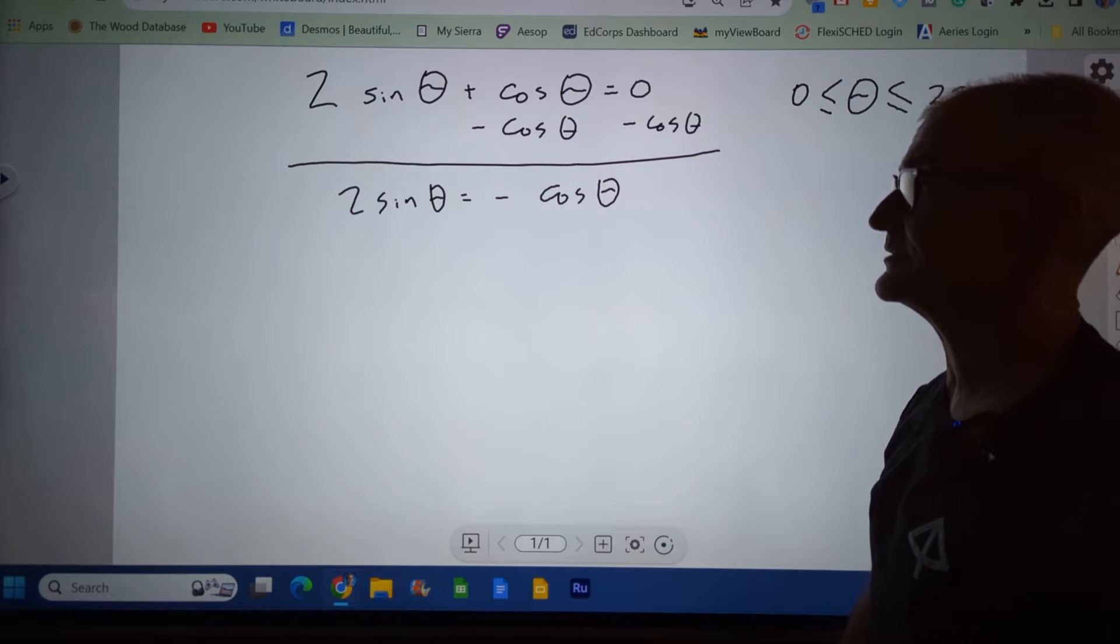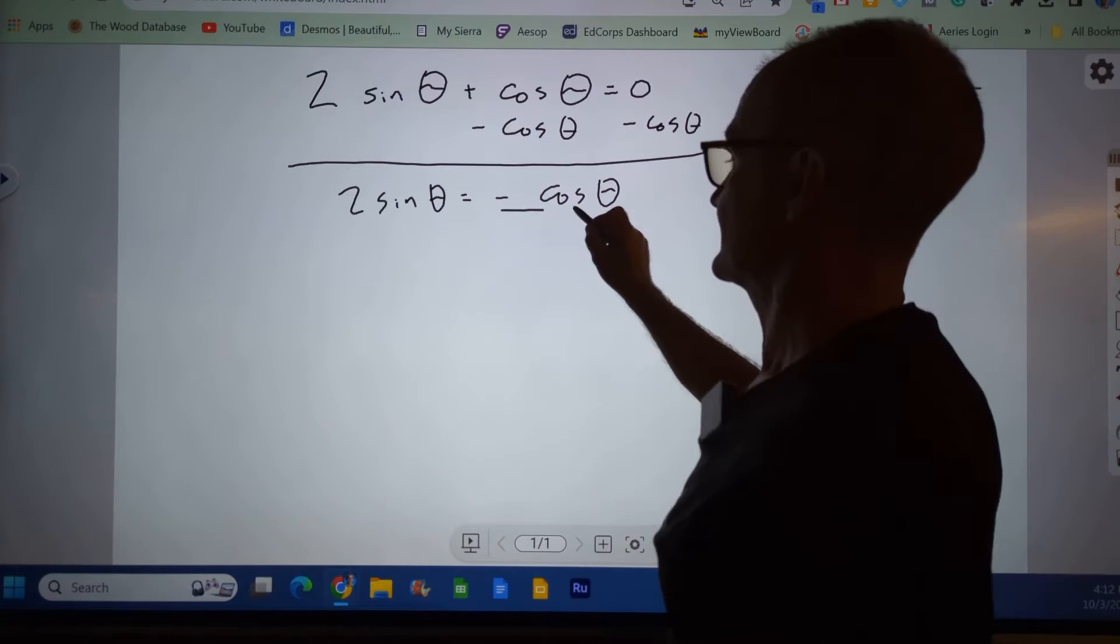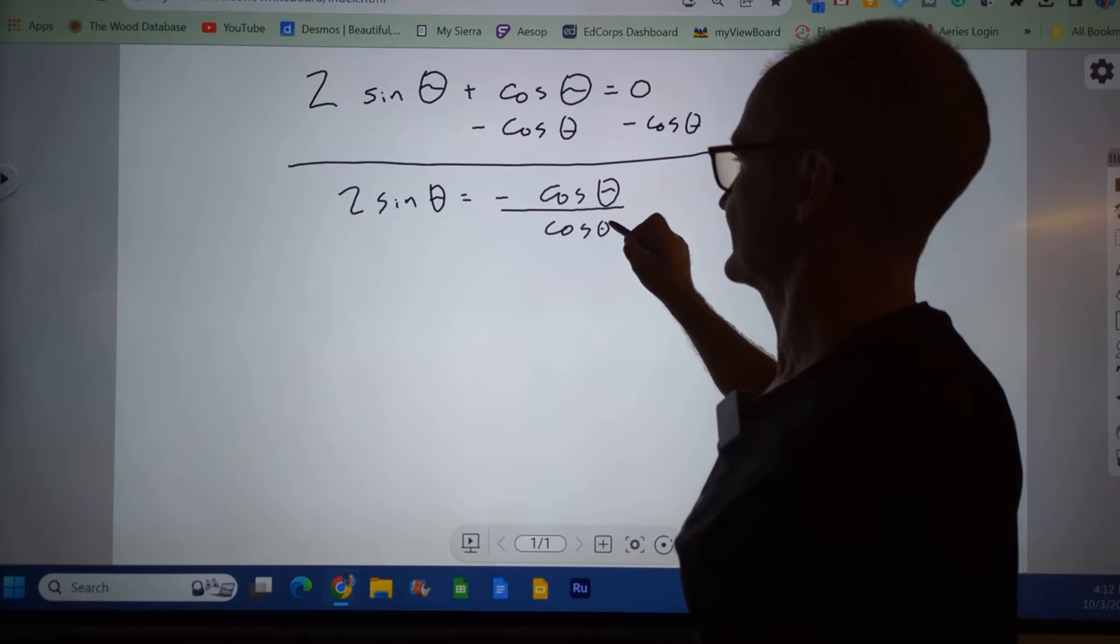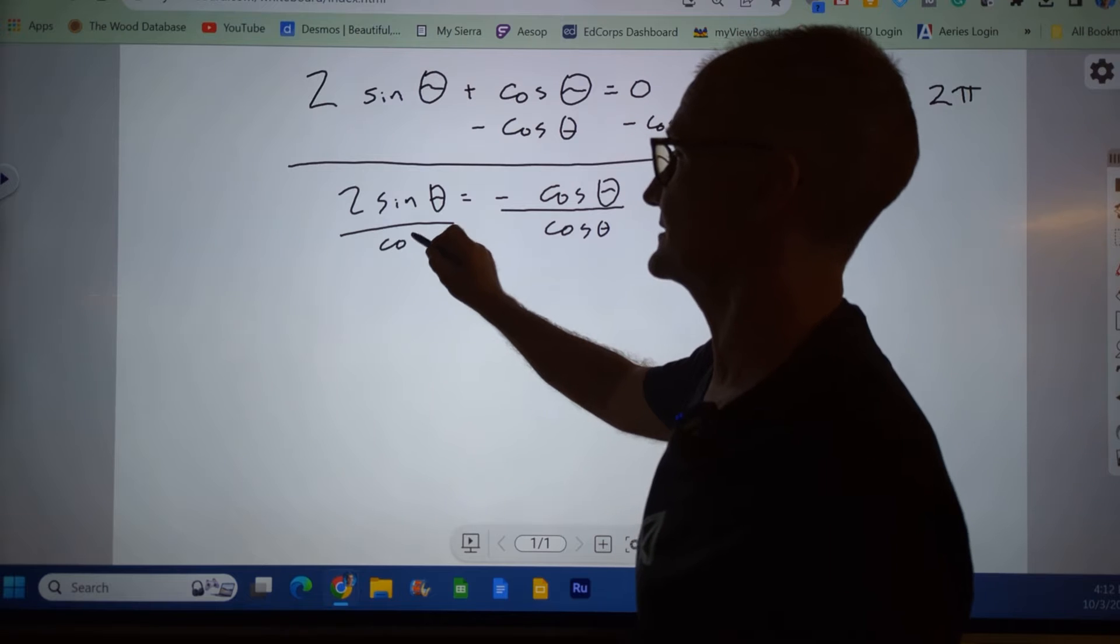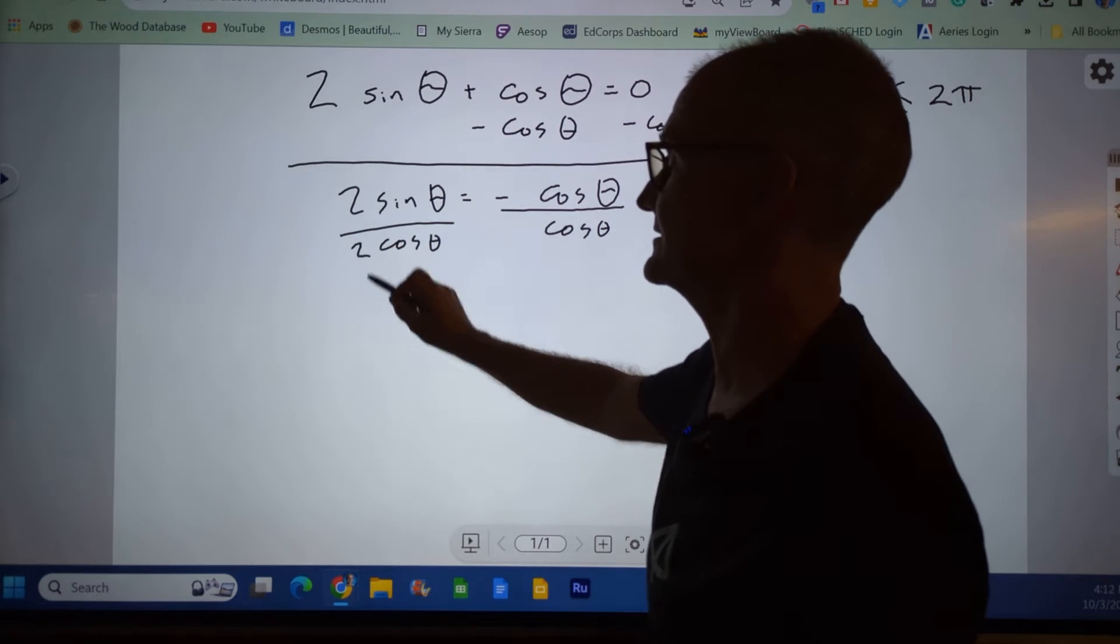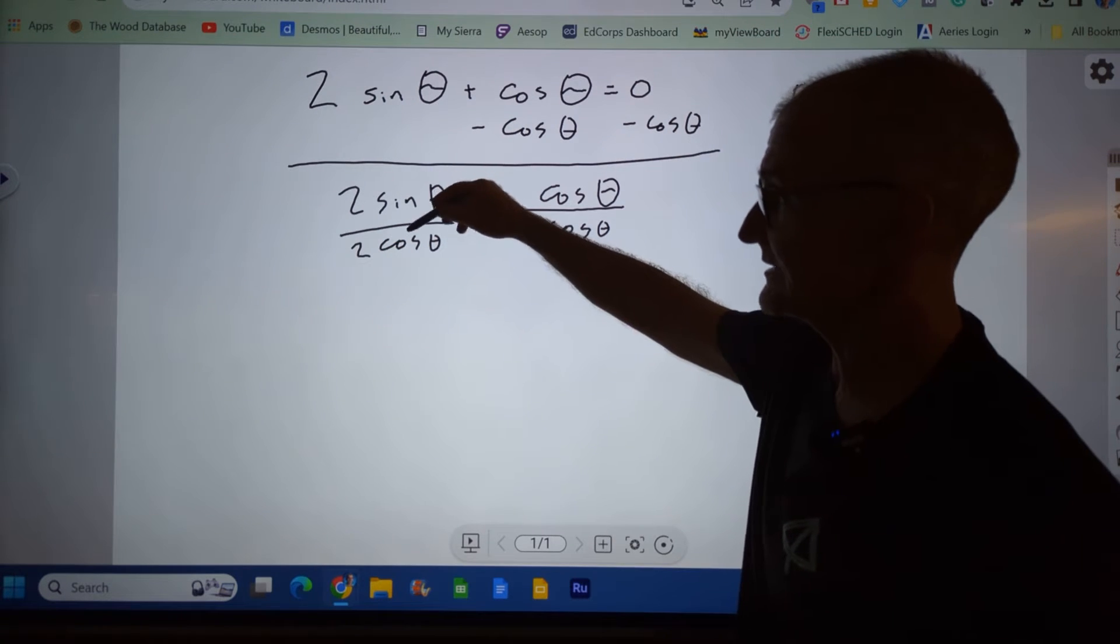From there I'm going to divide both sides of the equation by cosine of theta. And I'm also going to divide both sides of the equation by 2. That's going to give me sine over cosine.